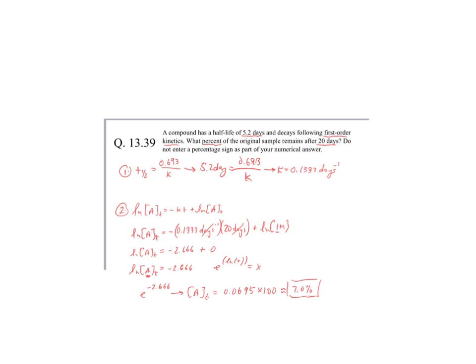So what made this challenging is we had to do two different calculations involving two different equations. The first to find the rate constant and the next to use that rate constant to say basically after 20 days, how much of that material would I have left? And the answer is 7%.